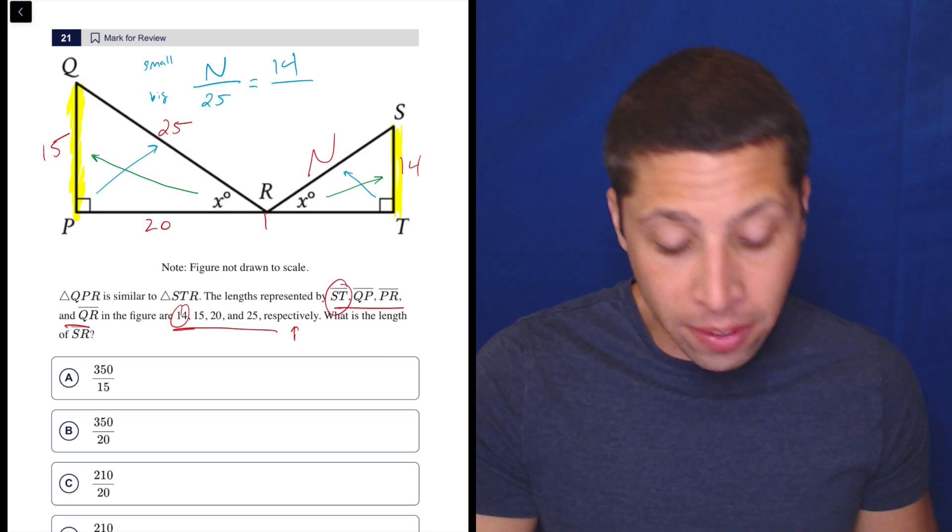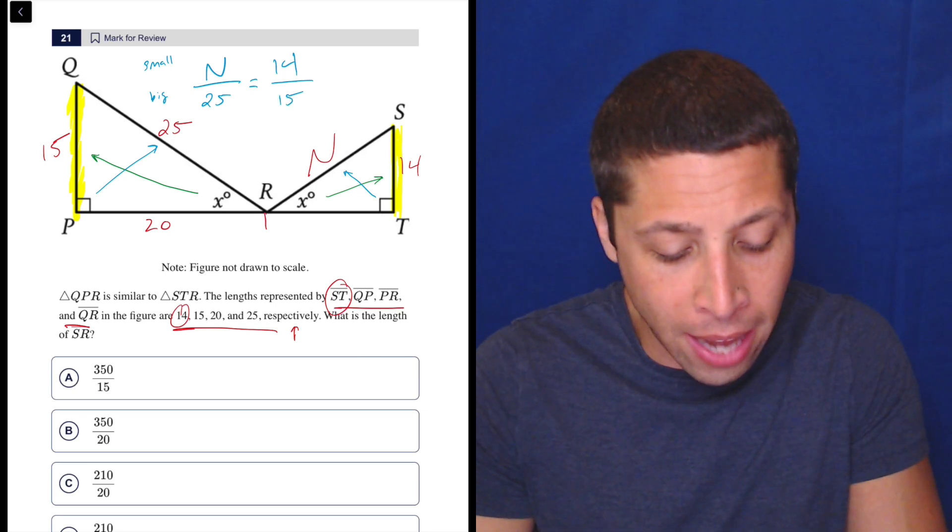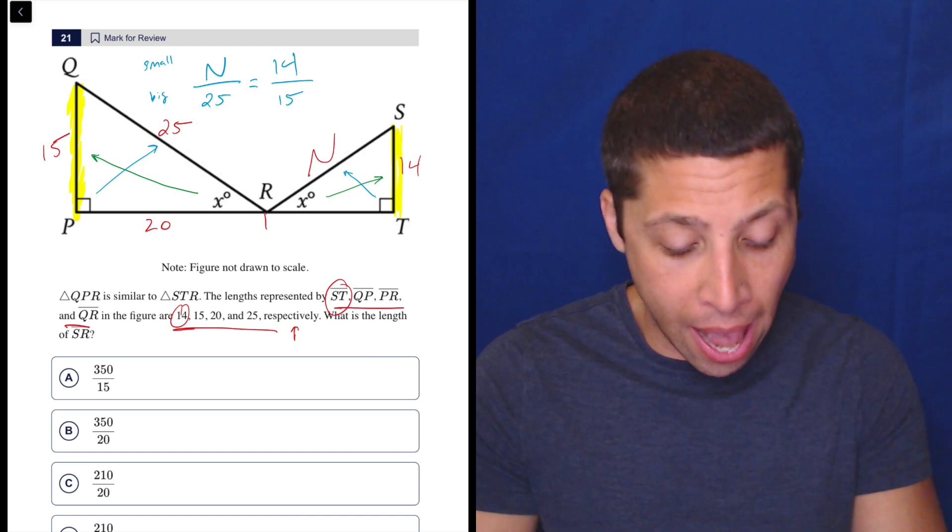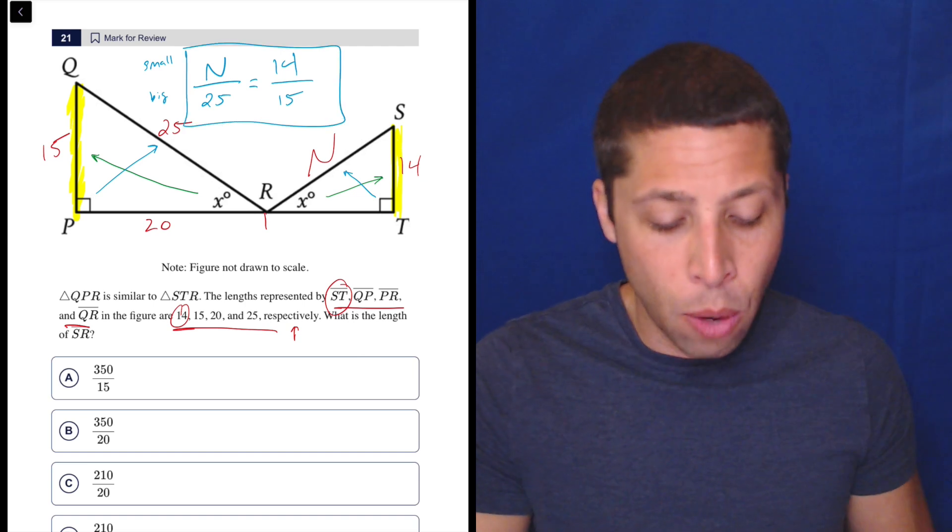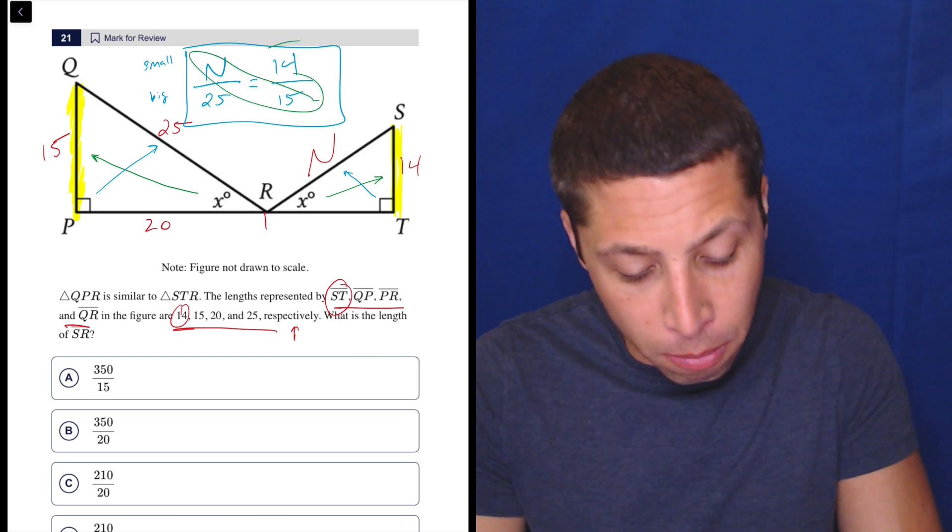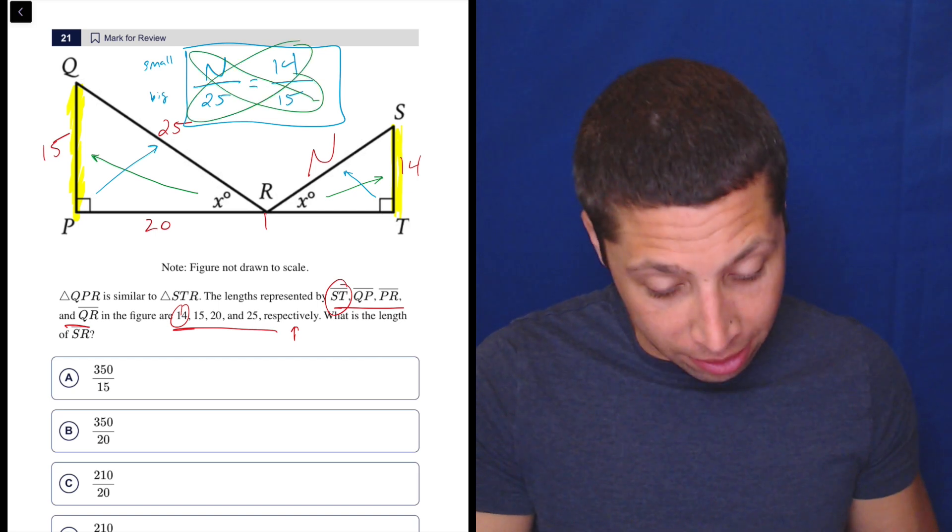So 14 is going to be on the top of the other side. And then as we said, the 15 on the other side is what corresponds to that because they're both across from that angle X. So now I have everything I need. I have a proportion where I only am missing one piece. So we would solve that by cross multiplying and dividing.